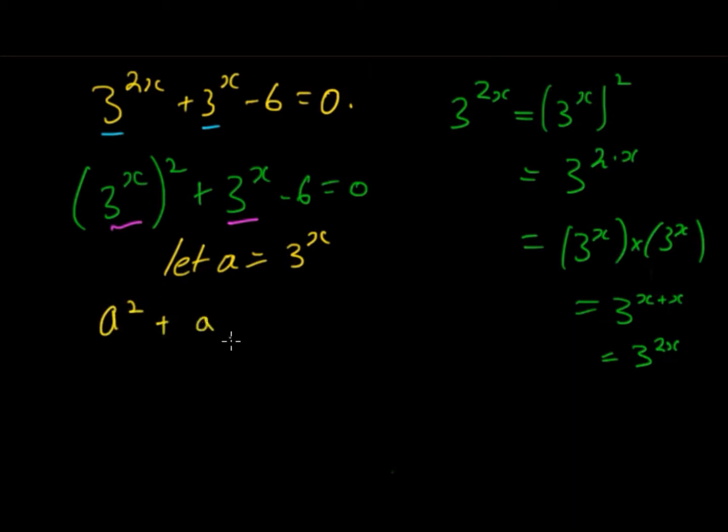That's a mistake. Make sure you don't write 3a because a is equal to 3^x. So unless it's 3 times 3^x, it's not 3a. This is a^2 + a - 6 = 0.